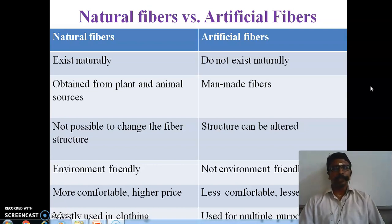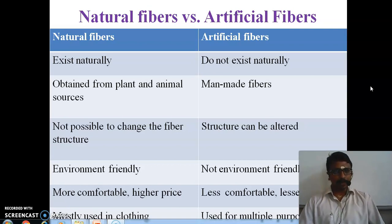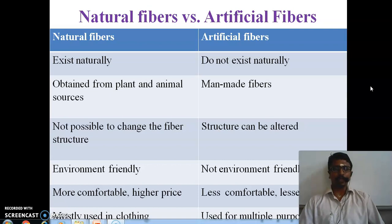Next, after the fibers are prepared, we have to do the spinning process. With the spinning process, we can get a thread-like filament, and from that thread-like filament we can manufacture clothes.